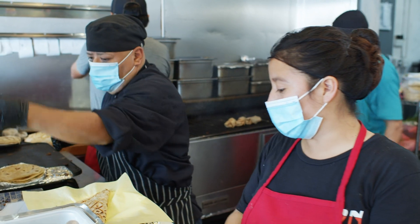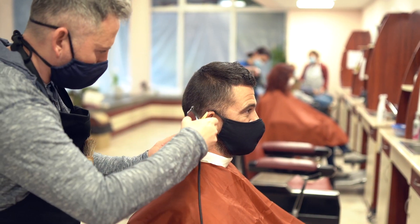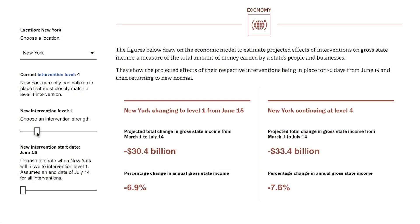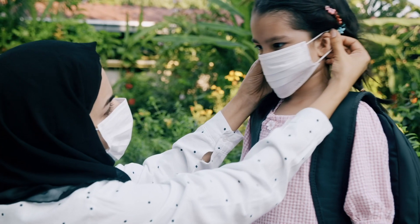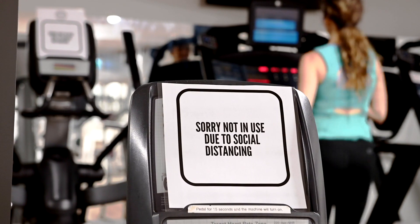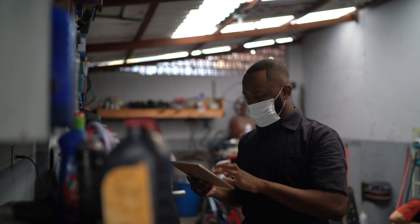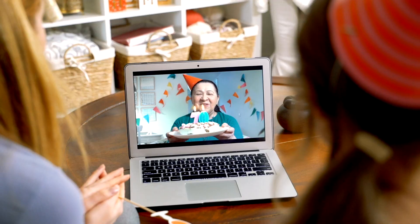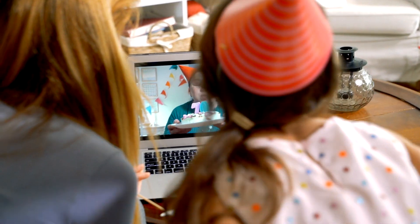On the economic side, we use another model to estimate how those same policies would affect economic outcomes, like gross state income. Incorporating both health and economic impacts into the same tool is really important because it allows policymakers to assess the trade-offs between the different policy options they may be considering.